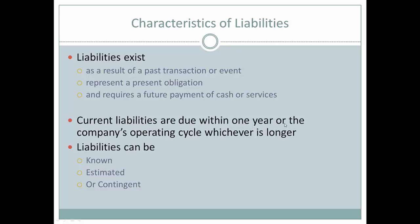Current liabilities are due within one year or the company's operating cycle, whichever is longer. Most companies' operating cycles are much shorter than one year, so the one year would be the longer of the two. Therefore, for the most part, current liabilities are seen as those obligations that are due within one year.